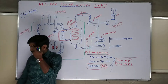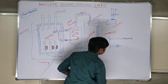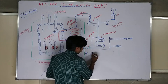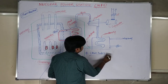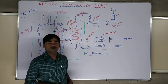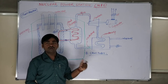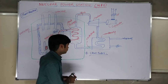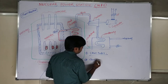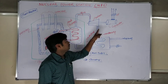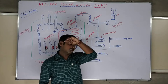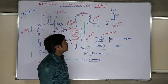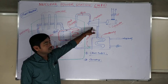Next we have the steam turbines. From the heat exchanger, the steam goes into the steam turbine. The purpose of the steam turbine is to convert the high-pressure steam into mechanical energy. That mechanical energy is then given to the generators.